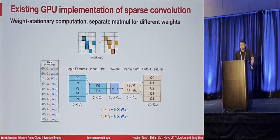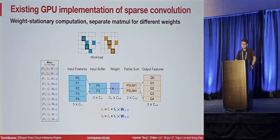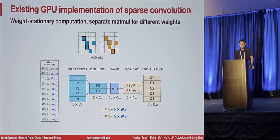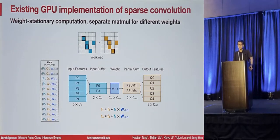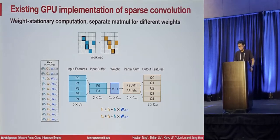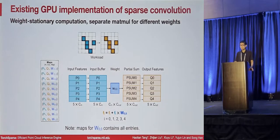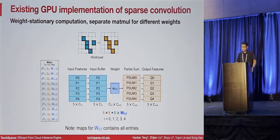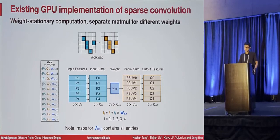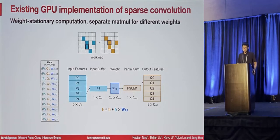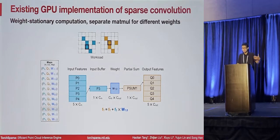For the existing GPU implementation, they take a weight-stationary dataflow and group computation for each weight together, performing matrix multiplication separately for different weights. For the first weight, because there are two map entries, we gather the two input features P0 and P3, multiply with the first weight, and scatter results to output positions Q1 and Q4 specified in the map. This is similar for the second weight. For the third weight W0, because all input entries appear in the map, we don't need gather and scatter — we directly do dense matrix multiplication. It is similar for weight 1,0 and weight 1,1.